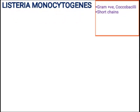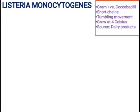This bacterium shows a specific movement which we call tumbling motility. If we talk about growth conditions, this bacterium can grow at 4 degrees Celsius temperature. This bacterium can grow and survive in dairy products, so Listeria monocytogenes can originate from dairy products.